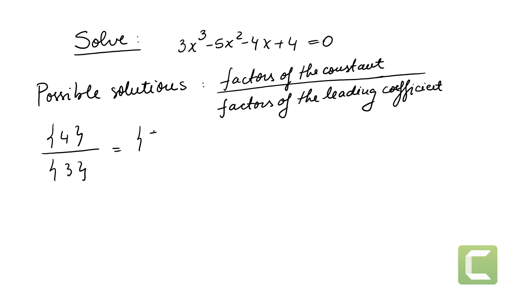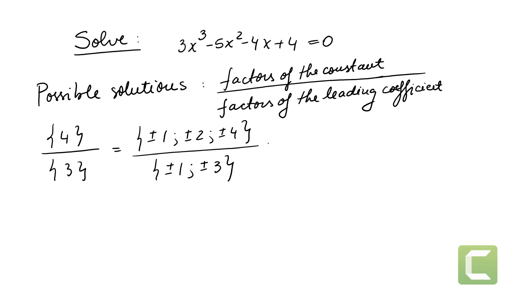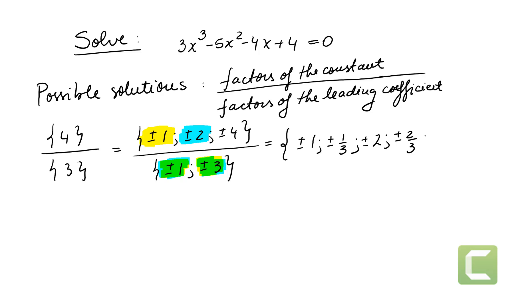The factors of 4 are ±1, ±2, and ±4. We divide them by the factors of 3, which are ±1 and ±3. Combining all these, the possible solutions are ±1, ±1/3, ±2, ±2/3, ±4, and ±4/3.